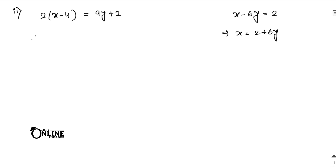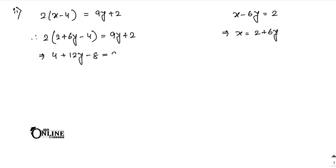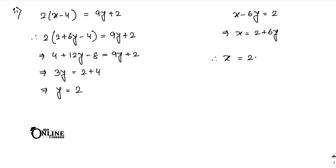Substituting x equals 2 plus 6y into the equation: 2(2 plus 6y) minus 4 equals 9y plus 2, giving 4 plus 12y minus 8 equals 9y plus 2. So 3y equals 2 minus (minus 4), which gives y equals 6/3 equals 2. Therefore x equals 2 plus 6 × 2 equals 14.